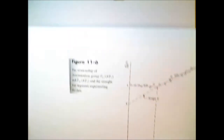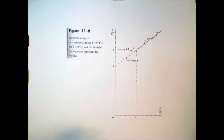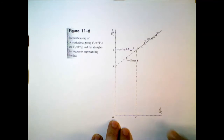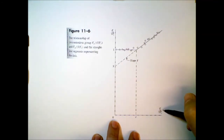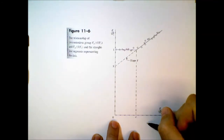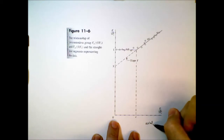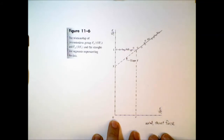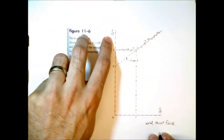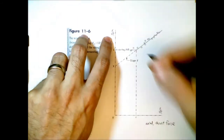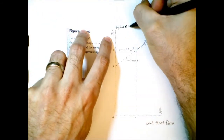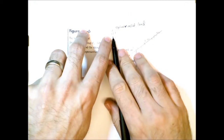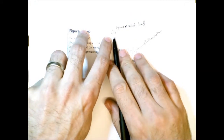So let's have a look at some data. This is Figure 11-6 from your textbook. On the horizontal axis we have a normalized value for the axial force — this is the axial or thrust force. On the vertical axis we have what we call the equivalent radial load, normalized using the radial force.